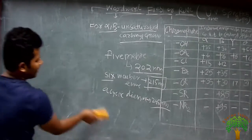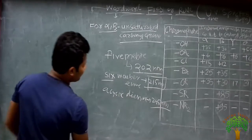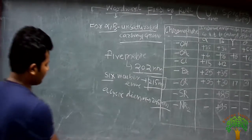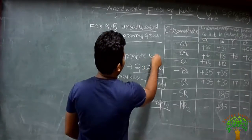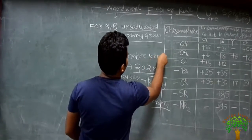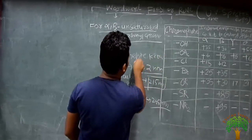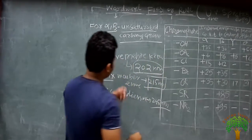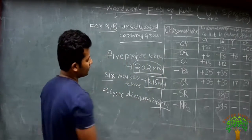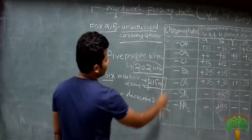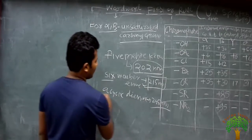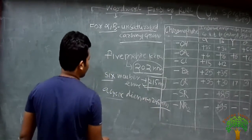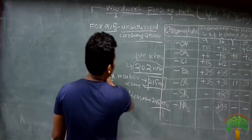Remember these values — these are the basic values. For a five-membered ketone or aldehyde, the value is 202 nanometers. For the six-membered ring, it is 215 nanometers. And for acyclic, it is about 245 nanometers.